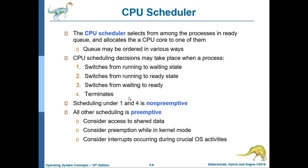The CPU scheduler selects from among the processes in the Ready Queue and allocates a CPU core to one of them. The queue may be ordered in various ways. CPU scheduling decisions may take place when a process: (1) switches from running to waiting state, (2) switches from running to ready state, (3) switches from waiting to ready, or (4) terminates. Scheduling under cases one and four is non-preemptive — meaning you cannot interrupt while the process is executing. All other scheduling is preemptive, meaning a higher priority or shorter process can preempt the currently executing process.